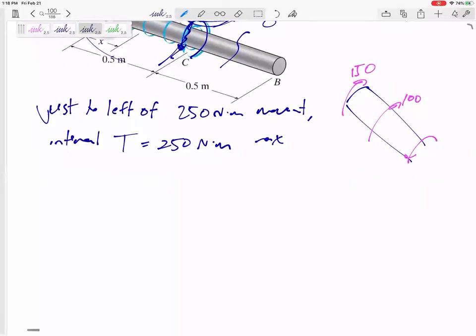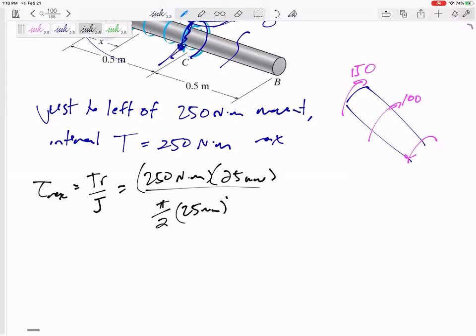It didn't ask for the maximum torque. It asked for the maximum stress. So tau max, TR over J, 250 Newton meters, a radius of 25 millimeters, J pi by two, pi by two R to the fourth. And then I changed meters to millimeters, a thousand right there. 10.2 MPa.